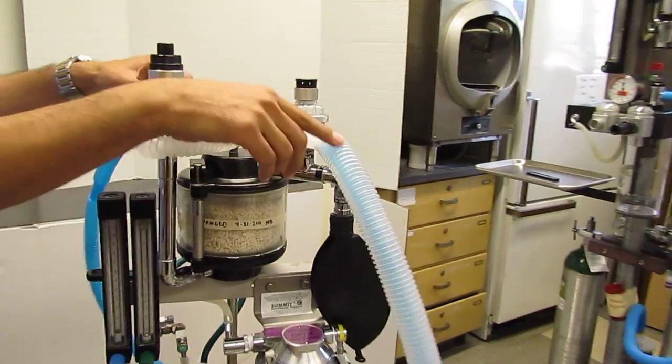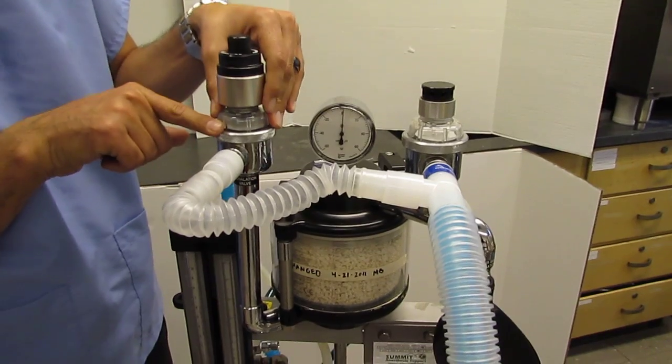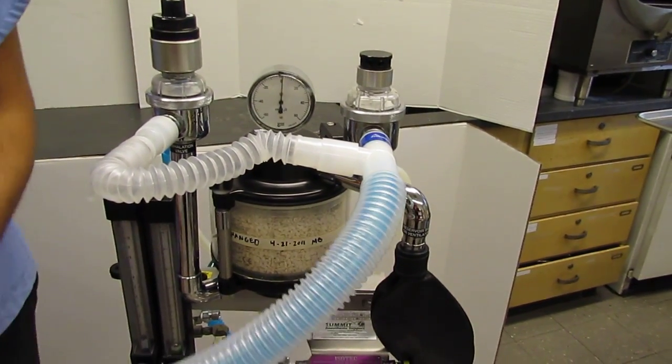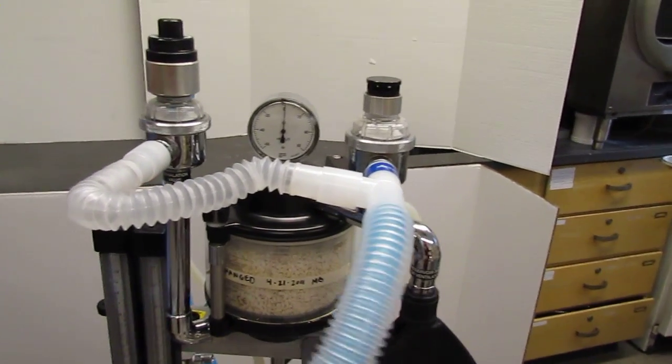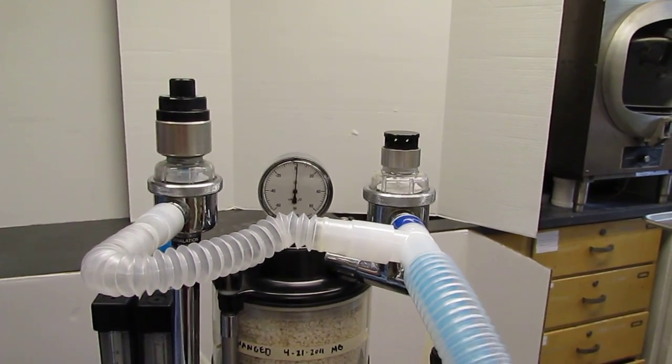As we get to this point here and we exhaled, we redirect the exhaled air to the expiratory unidirectional valve. This is a one-way valve that only flutters on exhalation, as I will demonstrate by exhaling into the circuit, and you see the valve flutters.